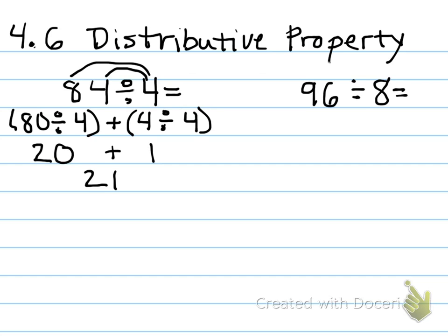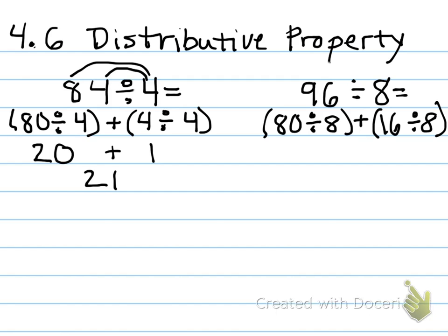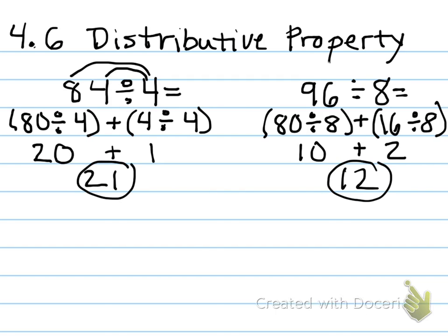So what could we still break this down into? I know an easy fact for me is 8 times 10, and that's 80. So one problem could be 80 divided by 8, and then plus how many do we have left over to get from 80 to 96? Well, 16, and I know that's definitely divisible by 8. So 80 divided by 8 would be 10, plus 16 divided by 8 is 2. So 10 plus 2 is 12. That's how you use distributive property.